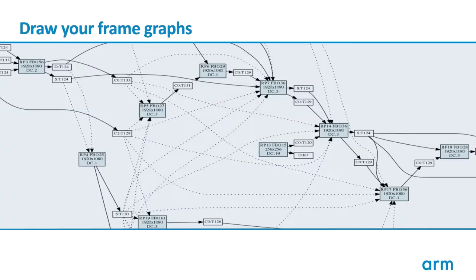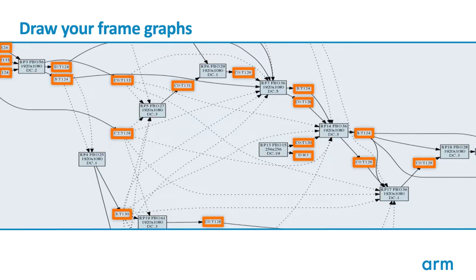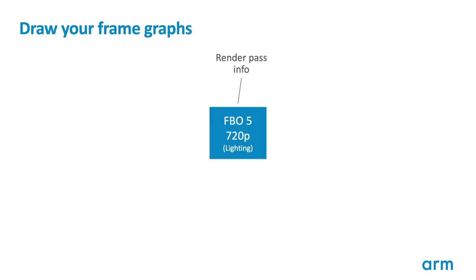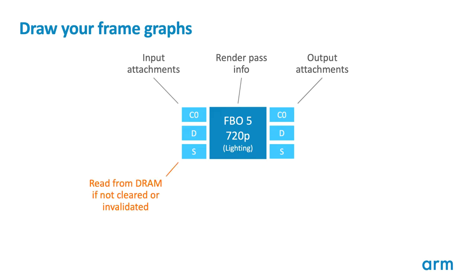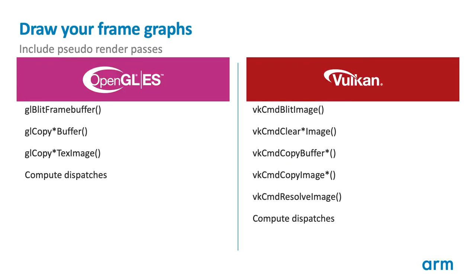One of the most powerful techniques for diagnosing render pass inefficiencies is to draw the frame graph, showing the render passes and the data flow between them. In this diagram, the large gray boxes are render passes, the small white boxes are attachments, and the lines show data flow. Solid lines indicate use as an attachment, whereas dotted lines indicate consumption as a texture. The basic technique for drawing a frame graph is relatively simple: treat each render pass as a box with input and output sockets for each attachment. Each input socket must be cleared or invalidated to avoid a load from memory, and each output socket must be invalidated to avoid a store to memory. Remember to include all render pass-like structures in the API, such as compute dispatches, copies, and blits — they all use the same GPU and their data must also flow through the DRAM.